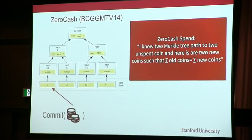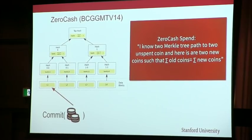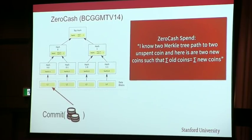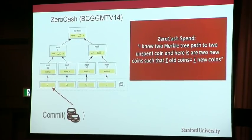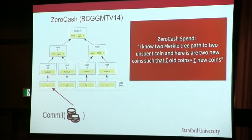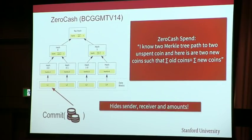If you look at this, all that the verifier will learn is that there are some unspent coins that have been spent. The verifier learns nothing about the actual value being transferred, or which coins are being transferred. So there's no linkability, no values revealed, and really nothing is revealed — so you have great privacy.